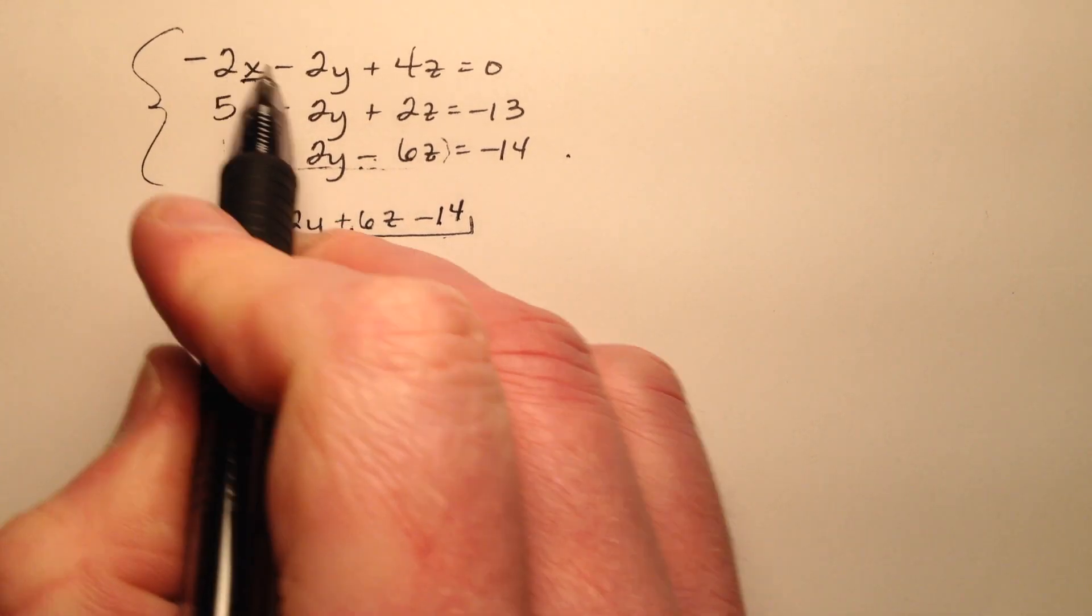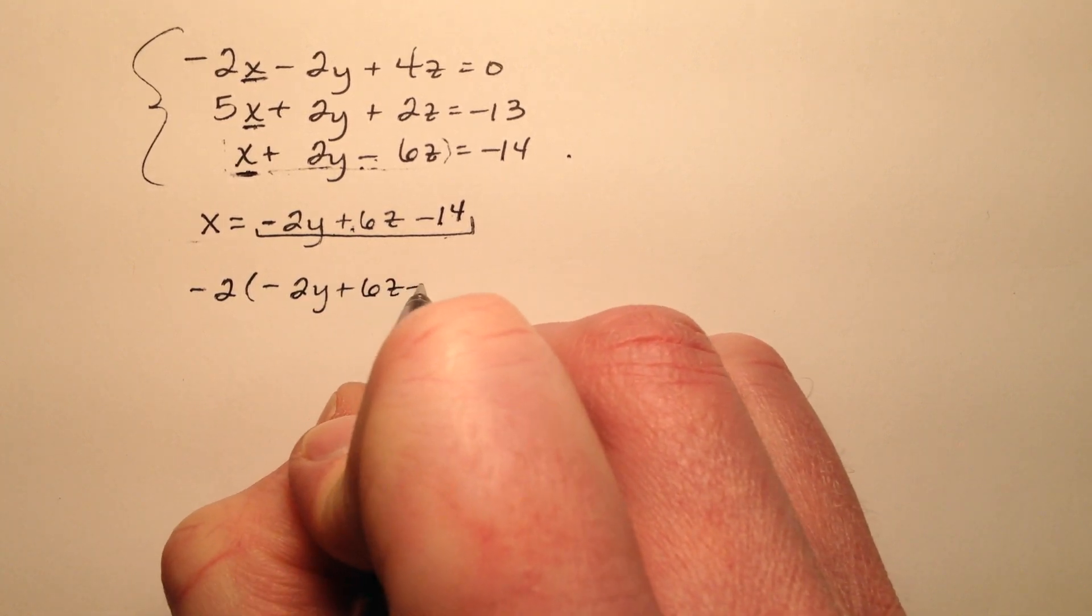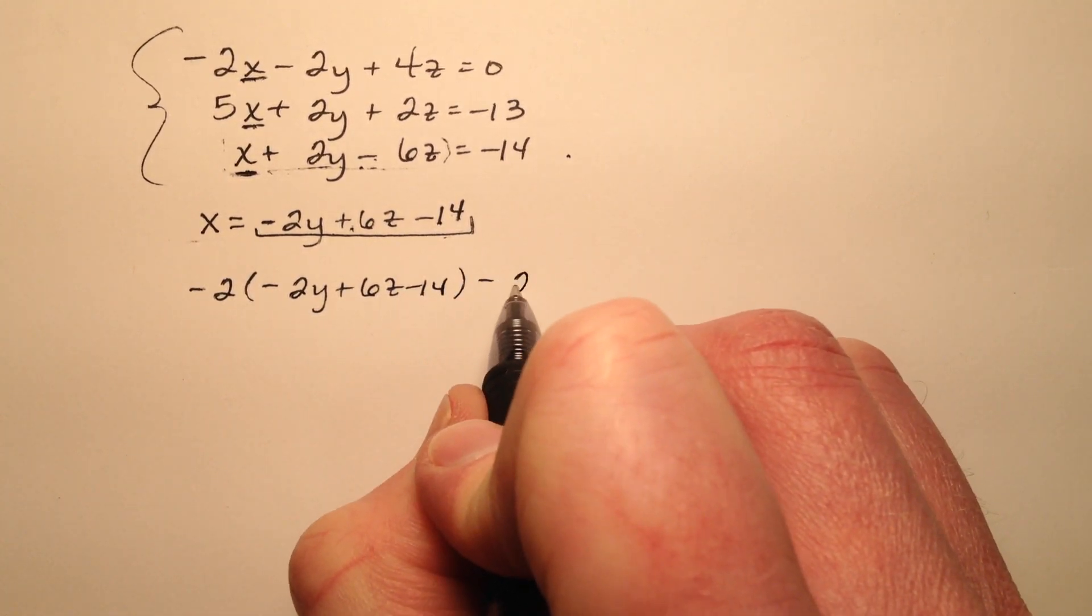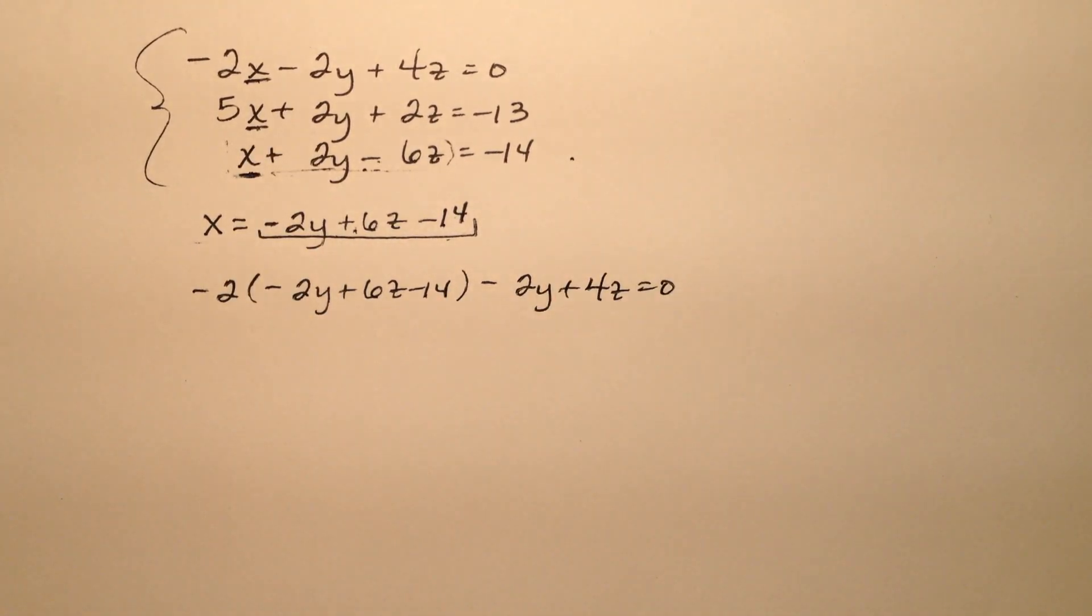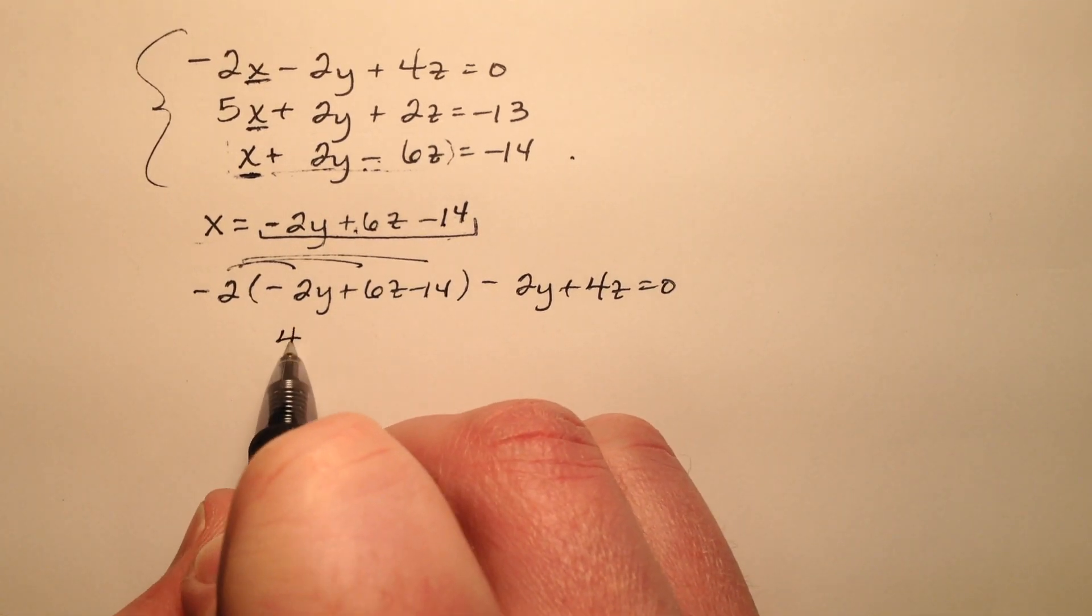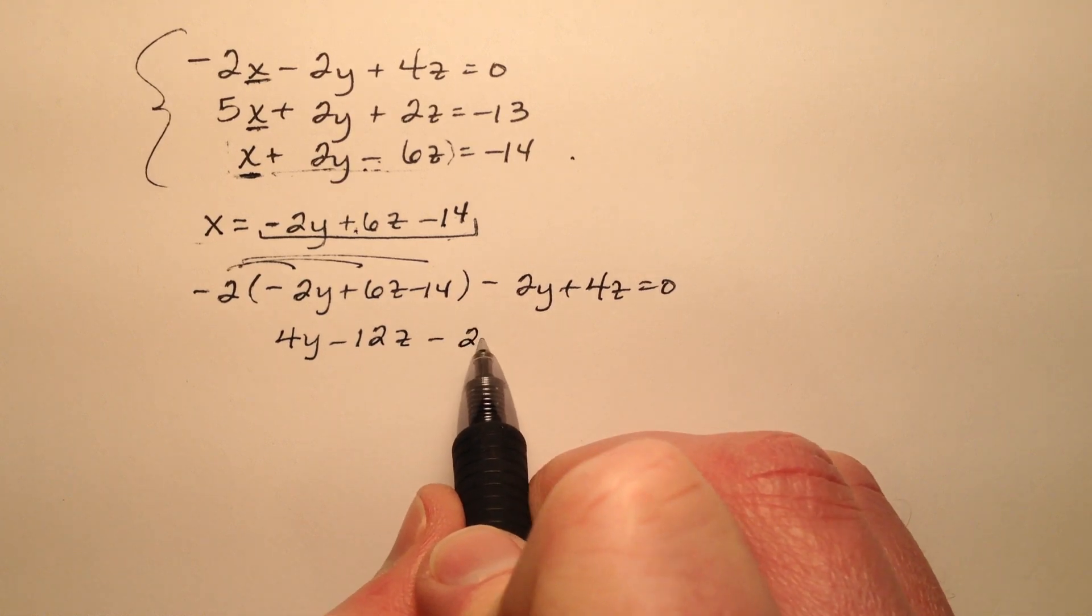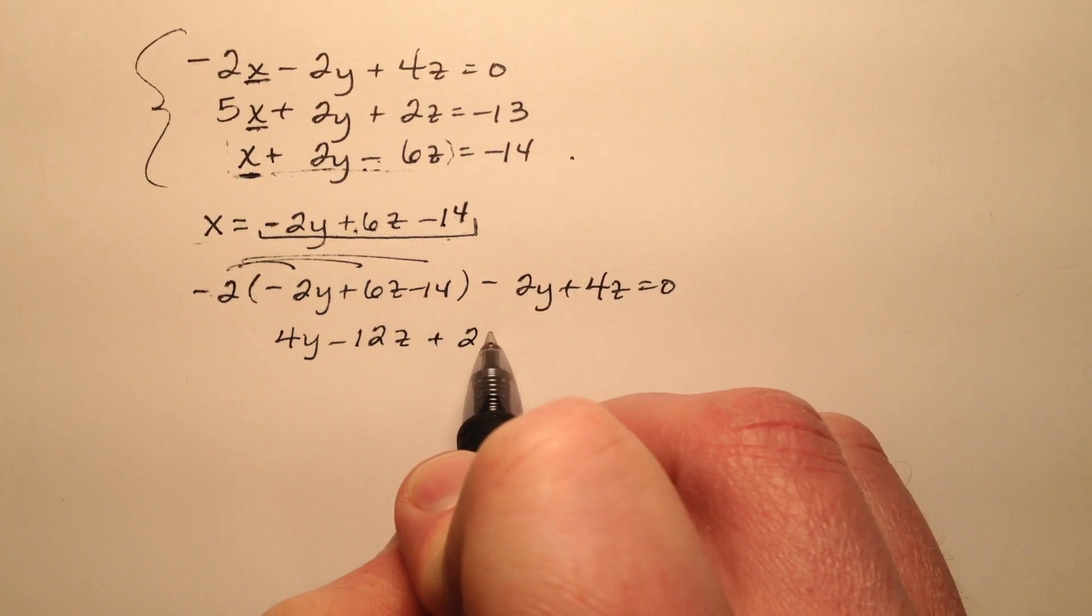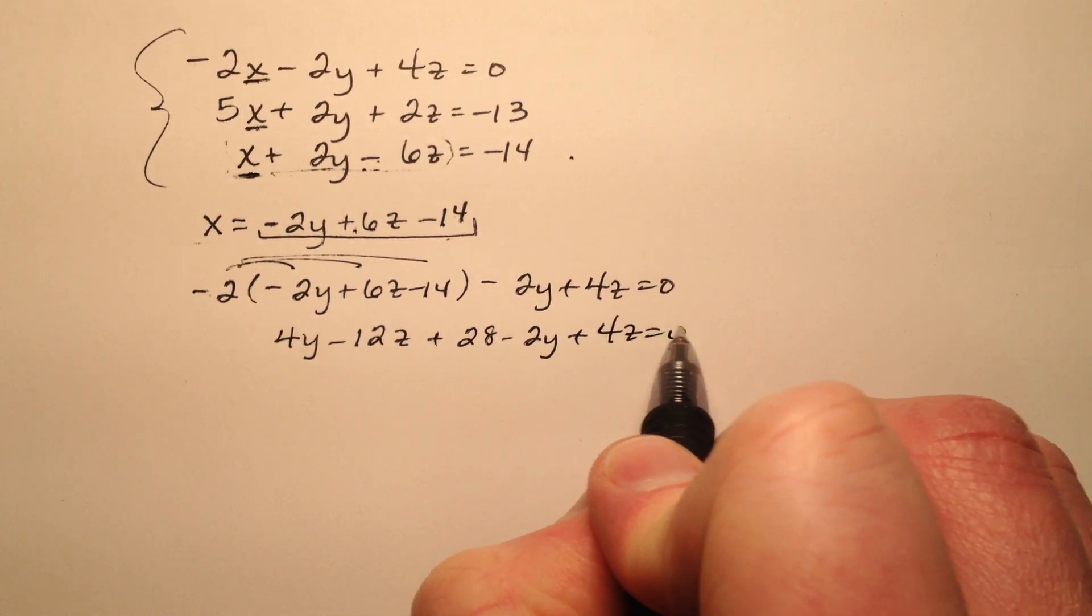So negative 2 times x, and x is negative 2y plus 6z minus 14, and the rest of the equation just kind of comes along for the ride. Let's go ahead and distribute and simplify this a bit. So 4y minus 12z minus 28 minus 2y plus 4z equals 0.